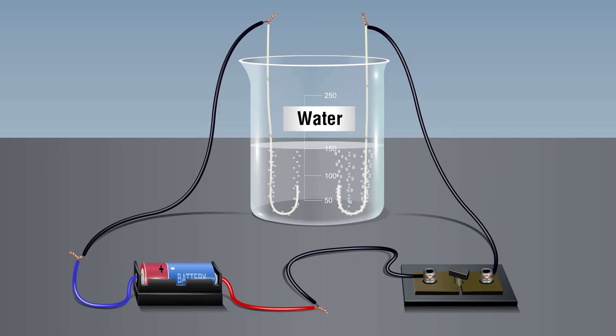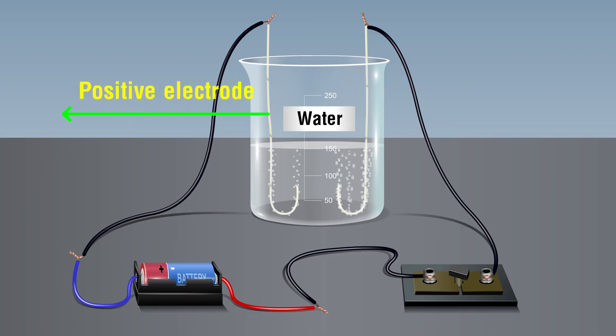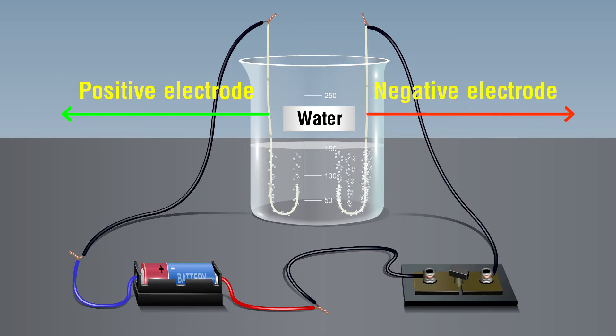The wire connected to the positive terminal of the battery is called the positive electrode, and the wire connected to the negative terminal of the battery is called the negative electrode.